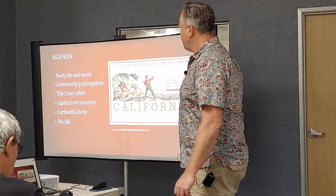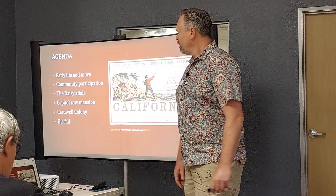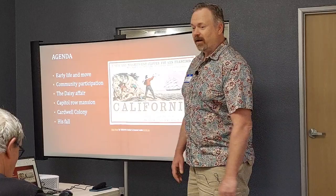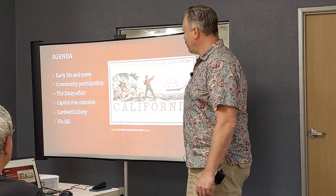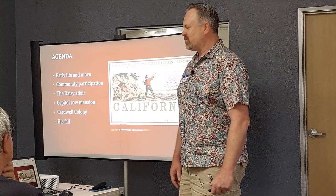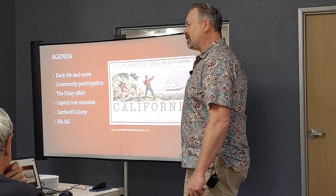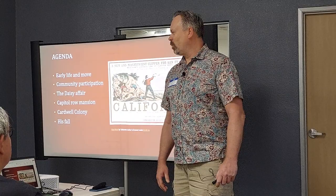I'll be giving a little background on his life, where he came from, the reason for his move to California, specifically to the Sacramento area. We'll talk about his community participation, what I call the Daisy Affair - it's a pretty interesting story. His mansion on Capitol Row, the Cardwell Colony, which is one of the reasons we're interested in this gentleman, and then his fall. He was pretty rich, as you can see from the mansion, but he did not end well.